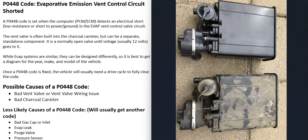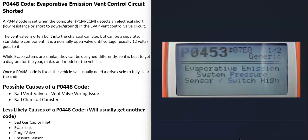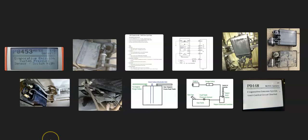The most common causes are a bad vent valve or the wiring going to it. Keep in mind that some kind of problem with the charcoal canister can also cause problems, especially when the vent valve is built into it - there might be an internal wiring issue causing problems, making a bad charcoal canister another possible cause. Other things that could cause problems in the EVAP system but are very unlikely to be related to this P0448 code - and usually you'll get another code for these - include a bad gas cap, an EVAP leak, a bad purge valve, or a bad pressure sensor. For example, if you're also getting a P0453 evaporative emission system pressure sensor high code, it could be a good idea to check that pressure sensor.